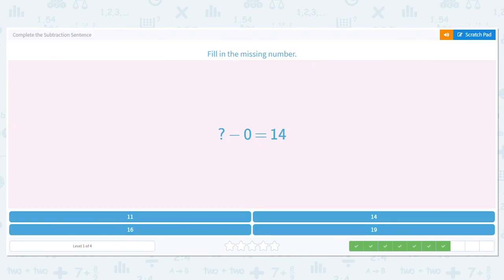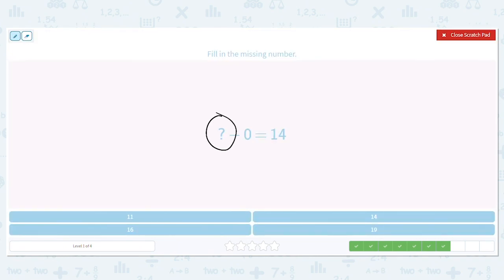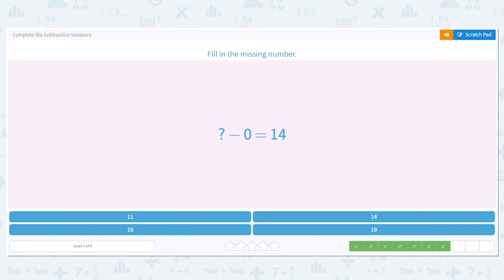Next, blank minus 0 equals 14. I'm missing that first number again. So what do I need to do? I can add 14 plus 0 equals 14. So that means 14 should go here. 14 minus 0 equals 14. It's a fact family. They work together.